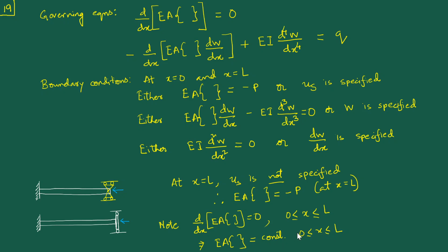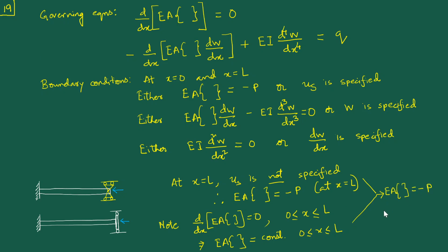Now you see the interesting situation: on one hand we have EA times the curly bracket equal to minus P at x equal to L, and on the other hand we find from the governing equation that EA times the curly bracket equals a constant over the whole domain. Therefore it must be true that EA times the curly bracket equals minus P for all values of x between 0 and L.